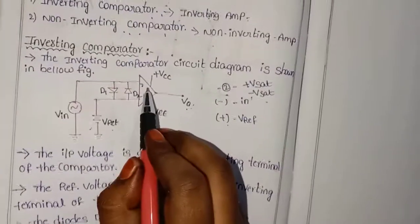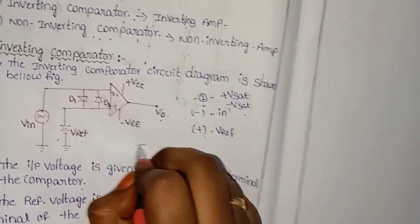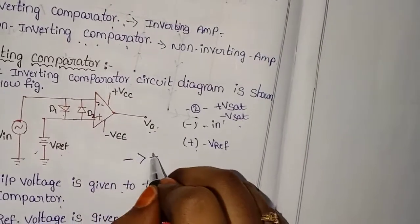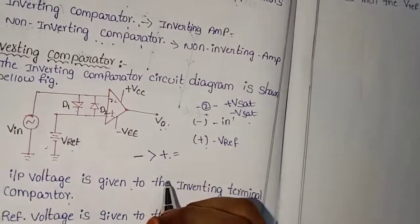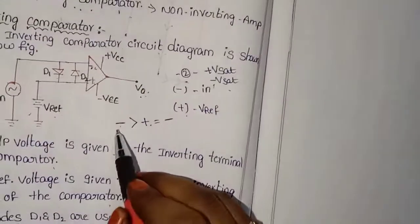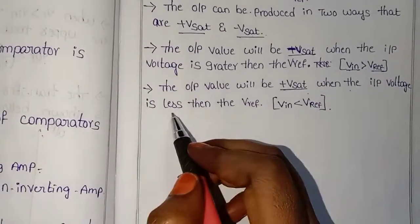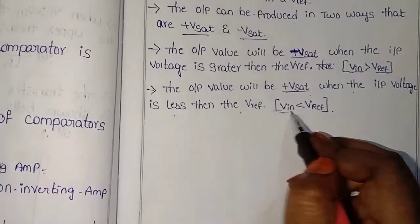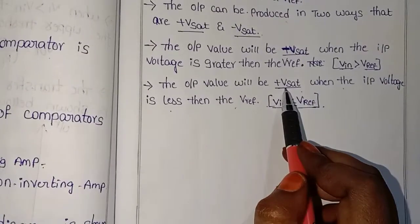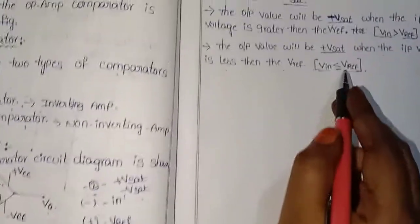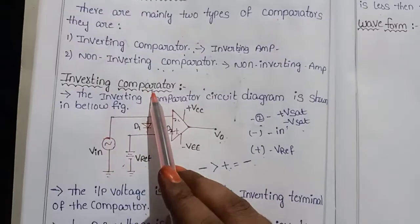When the input voltage at the inverting terminal is greater than the reference voltage, the inverting terminal has a larger negative signal than the positive, so the output is at negative saturation. When the input voltage is less than the reference voltage, the output is at positive saturation.